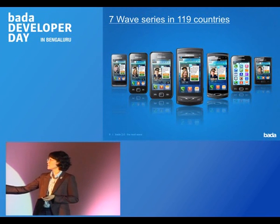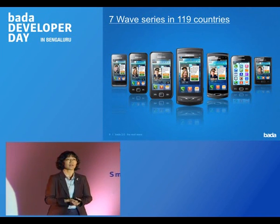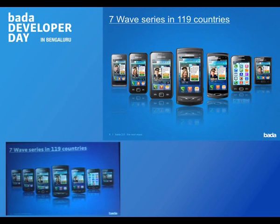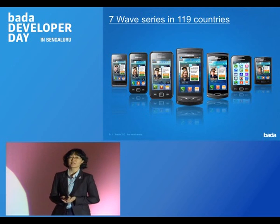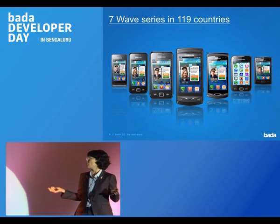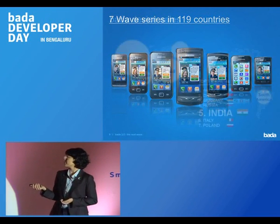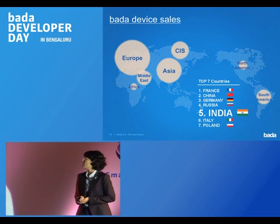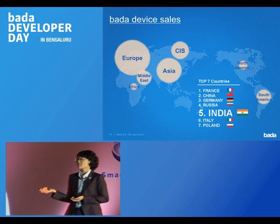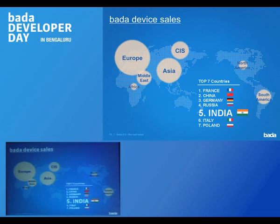We've seen the main features of Bada 2.0, and now I'd like to talk about the devices. Last year we launched the first Bada device, Wave, and including that device Samsung has launched a total of seven devices within the Wave series — all based on the Bada platform — distributed in more than 100 countries. Looking at Bada device sales data, Bada devices have mainly sold in Europe. In the top countries list, European countries like France, Germany, Italy, and Poland are included.